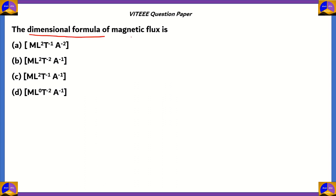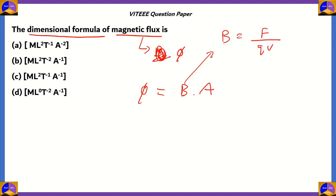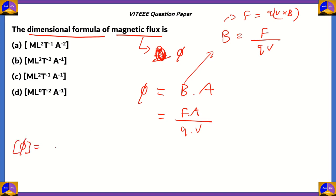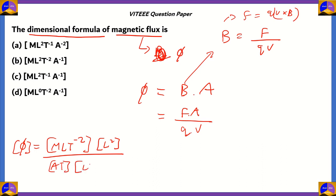Now let's look at another question: finding the dimensional formula of magnetic flux. Magnetic flux is represented as phi (φ). phi = B × A, where B is the magnetic flux per unit area. B can be calculated as F/(qv) from the formula for magnetic force F = qv × B. So the final formula for magnetic flux is force times area divided by charge times velocity.